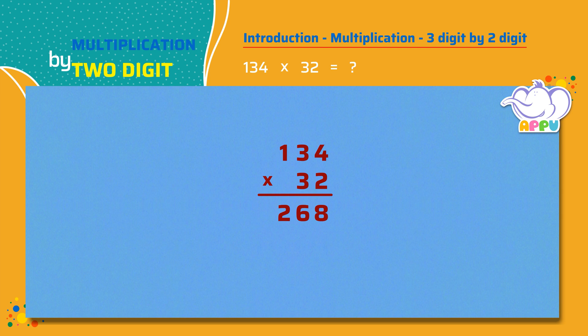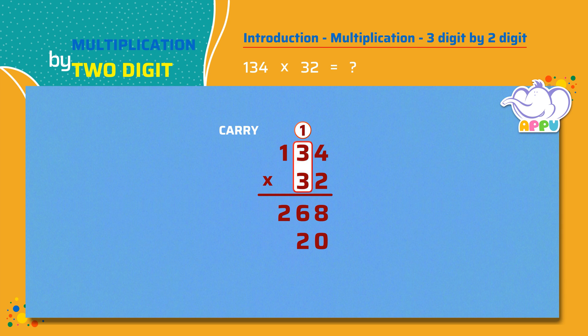We place zero in the ones place below eight. We now multiply the number in the ones place by three, which is four times three equals twelve. We keep two and carry one. We multiply the number in the tens place by three, which is three times three equals nine. Then add the carry to get nine plus one equals ten.